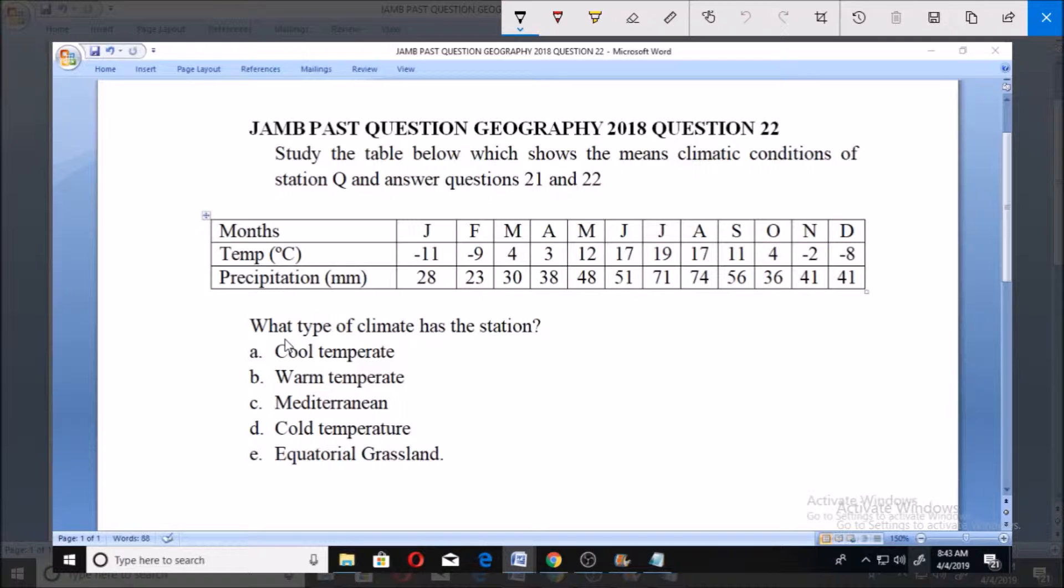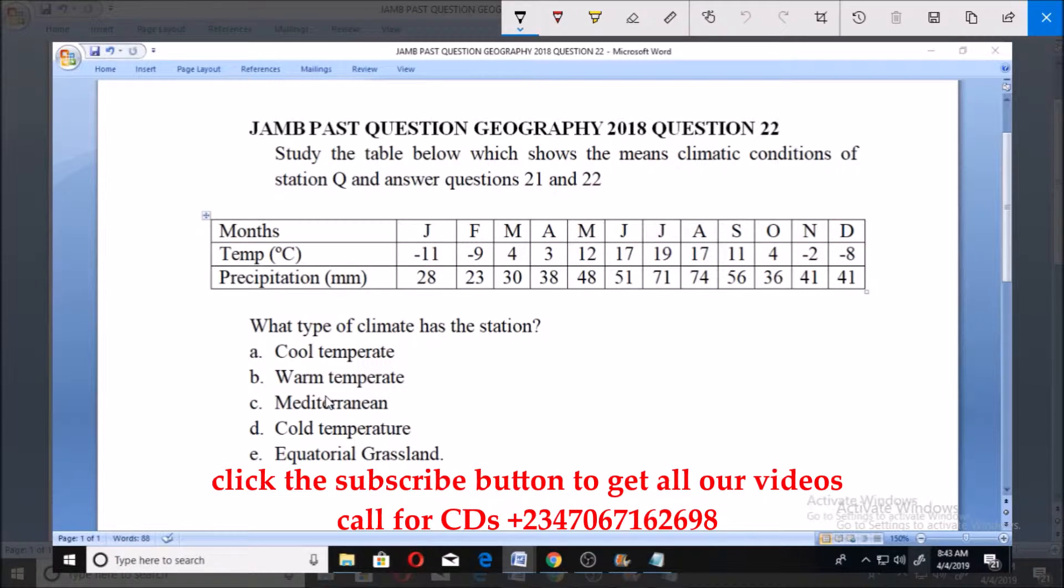The question goes: what type of climate has the station? A: Cool temperate, B: Warm temperate, C: Mediterranean, D: Cold temperate, E: Equatorial Grassland.